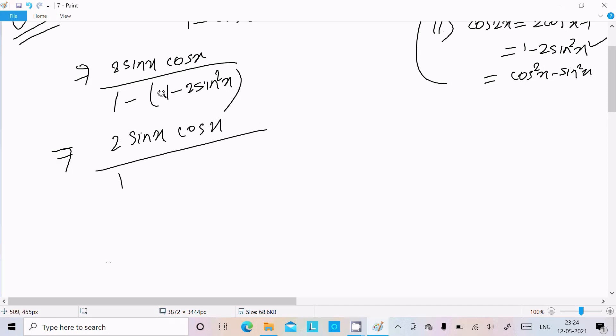1 minus 1 plus 2sin²x. So right here 2sinx into cosx. So this cancels, that cancels. So here 2sin²x into sinx.